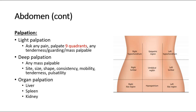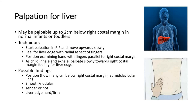For palpation of the liver, a normal liver may be palpable up to 2 cm below the right costal margin in infants or toddlers. For the technique, start palpating in the right iliac fossa and move upwards slowly during each exhalation of the patient — 1 cm by 1 cm — feeling the liver edge with the radial aspect of the fingers. Position the examining hand with fingers parallel to the right costal margin and palpate towards it. Once the liver edge is detected, state how many cm it lies below the right costal margin at the mid-clavicular line.